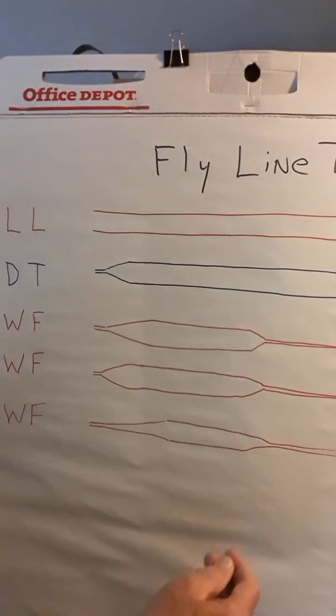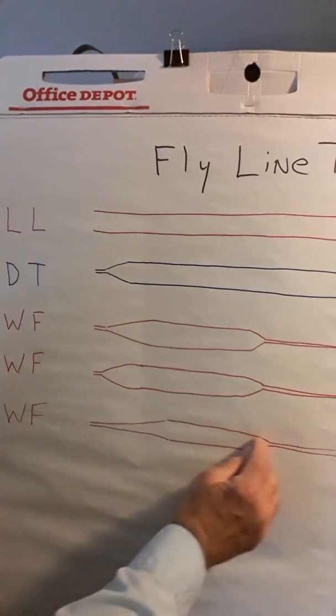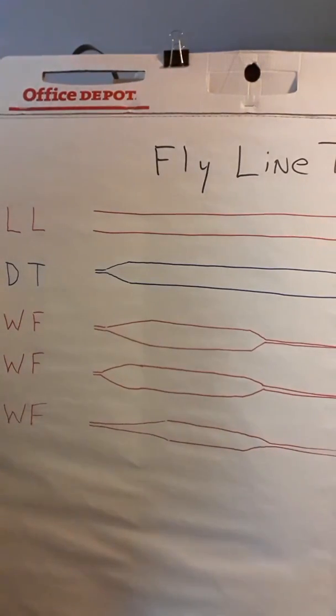So if you're out west and you're mending on big rivers, you want a fly line that's got an extremely long head. For example, the Ballistic Pro Performance lines, Rio Longcast, Scientific Anglers has an Extreme Distance line. Those are good for that.